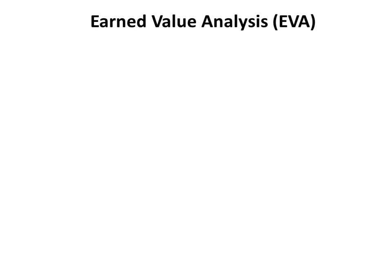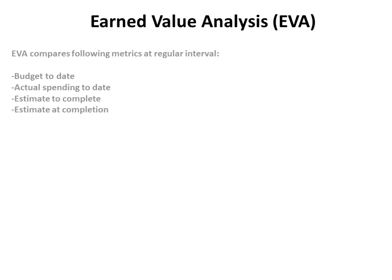Earned Value Analysis (EVA) compares the following metrics at regular intervals: budget to date, actual spending to date, estimate to complete, and estimated completion. In a CISA question, if any of these specific metrics are mentioned and the objective is to monitor the project, the answer should be Earned Value Analysis.